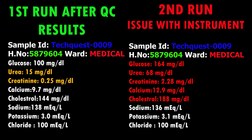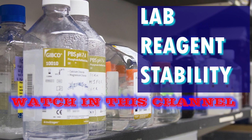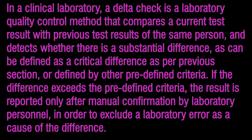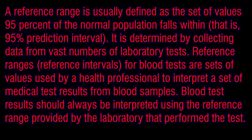Most labs run the QC once every eight hours, and the analytical method can go wrong at any time and give erroneous results. The technologists validating the test results should be very careful to watch the results with delta check, reference range, and should be able to correlate doubtful results with other test results.